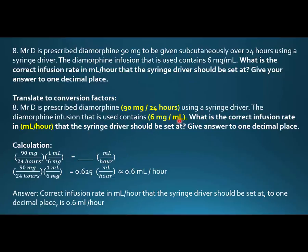So we have 1 mL per 6 milligrams and we have 90 milligrams per 24 hours as well. So we can get rid of the 90 milligrams and 6 milligrams units, and we end up with 0.625.